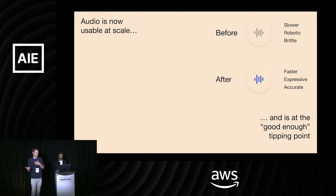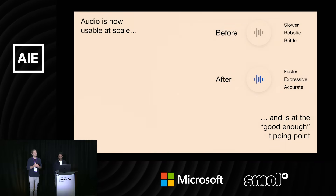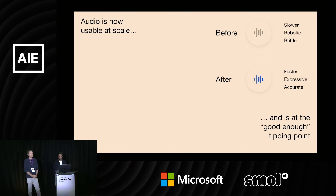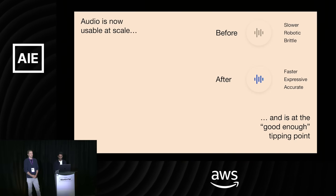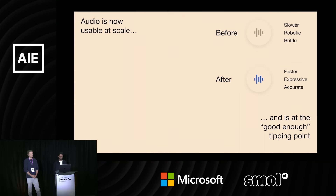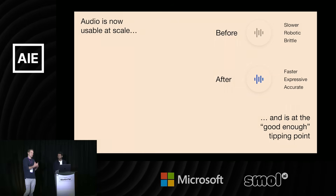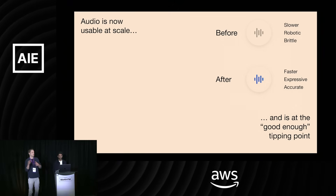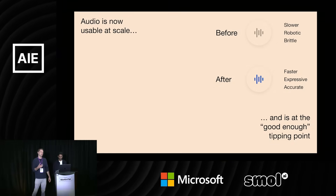Now, fast forward to today — these are the models for a very similar use case and how they behave now. [Demo plays: fast, expressive model interaction where the user asks for a haiku about whispers, then interrupts to redirect to stars, and the model successfully pivots, delivering an expressive haiku about stars.] You can see it's much faster, incredibly expressive and emotional. You can steer it, get it excited, slow it down, and it's accurate. We interrupted it, had it change course and do something else, and it responded well. The models are really at that good-enough tipping point where you can start to build much more reliable experiences.